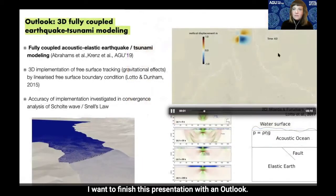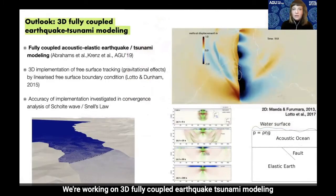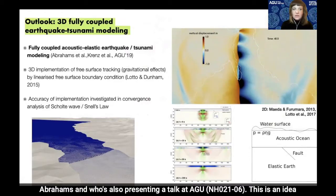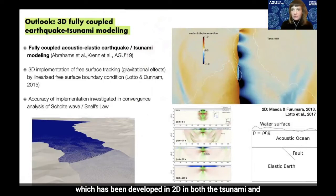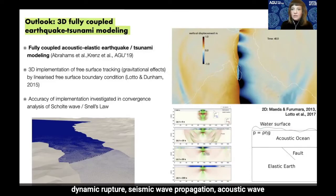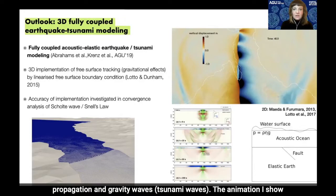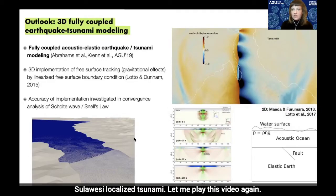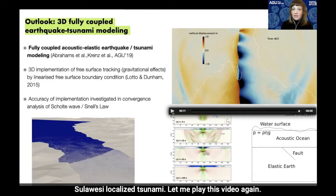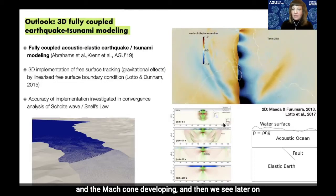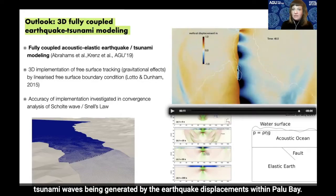I want to finish with an outlook. We are working on 3D fully coupled earthquake-tsunami modeling together with Eric Dunham's group, especially with Lauren Abrahams, who also has a talk at AGU. This idea — developed in 2D in both the tsunami and dynamic rupture communities — simultaneously models dynamic rupture, seismic wave propagation, acoustic wave propagation, and gravity and tsunami waves. I show here a 3D model using CISOL for the Palu-Sulawesi localized tsunami, where a strike-slip event goes supershear, the supershear Mach cone develops, and we then see the tsunami wave generated in Palu Bay.